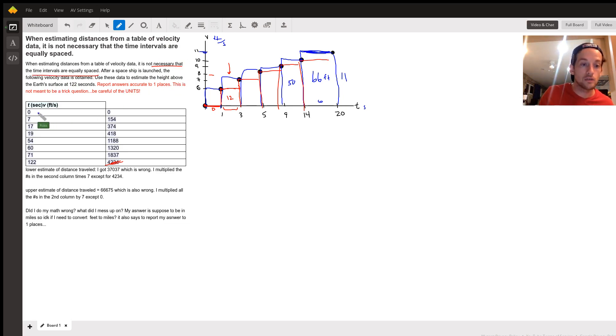In this case, the first interval from 0 to 7, that's 7, and you're going to multiply that times your first velocity, which is 0. So 7 times 0 is 0. The next interval here from 7 to 17 is 10, and the height of your next rectangle, the next velocity, is 154. Your next interval from 17 to 19 is 2, and we multiply that times 374, etc, etc, etc.